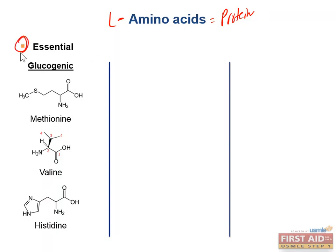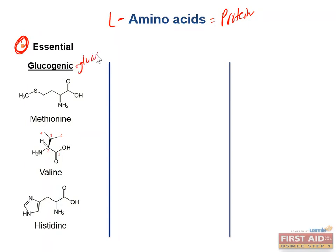Starting with essential amino acids — these simply means they need to be supplied by the diet, since humans can't produce them. The glucogenic essential amino acids can be converted to glucose via gluconeogenesis in the liver, and these include methionine, valine, and histidine. There are also many non-essential glucogenic amino acids, which are glucogenic because they can be used to make either pyruvate or one of the TCA cycle intermediates.